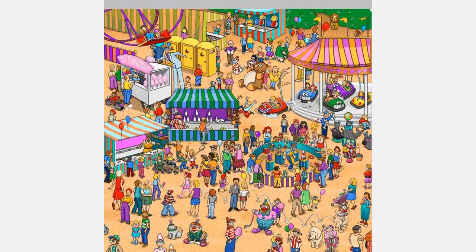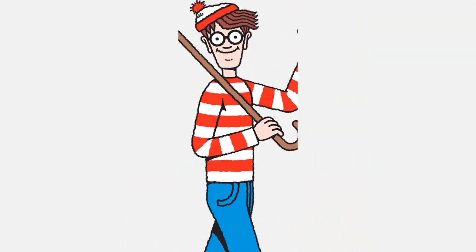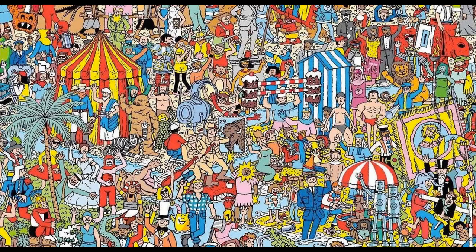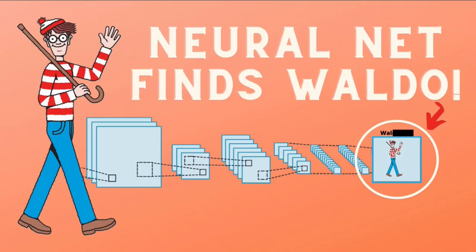So you remember those Where's Waldo puzzles where you had to find one geeky glasses-wearing teenager named Waldo in a sea of small look-alikes within a giant image? Well yeah, you guessed it from the title. Welcome to training a neural network to find Waldo.